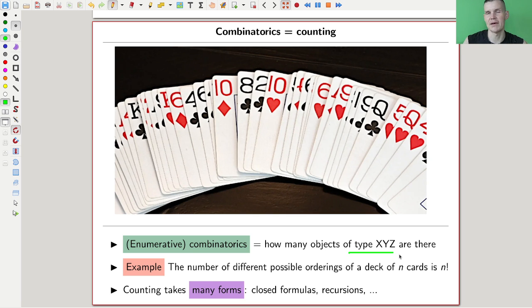So counting takes many types of forms. And what you usually see is like closed formulas. So this really is a closed formula. A very closed formula, actually, n factorial. Sometimes you see recursions or other types of counting things. Okay, that's roughly the idea of combinatorics. You want to count something, and whatever kind of form counting takes could even be, as I said, kind of a bijection between sets or something. Okay, that's combinatorics. There's a very condensed version of what combinatorics is. Combinatorics equals counting.